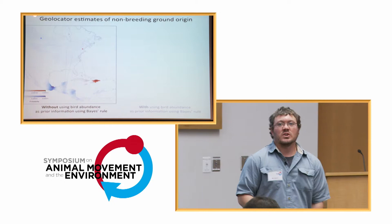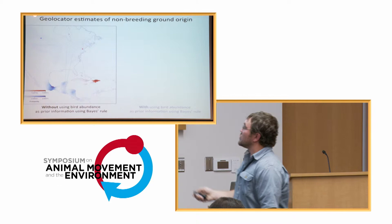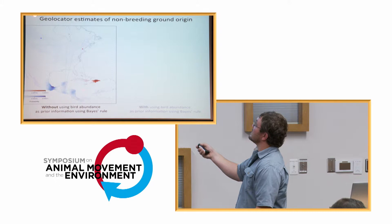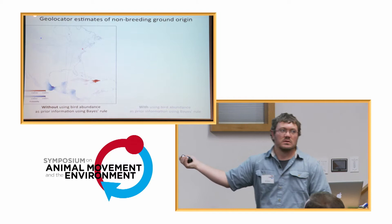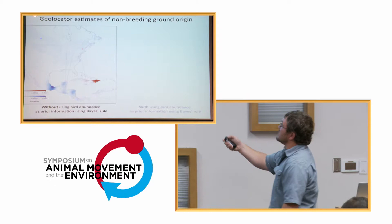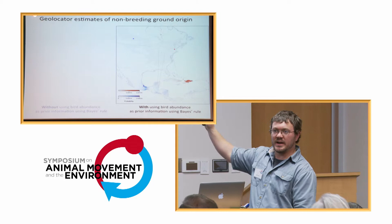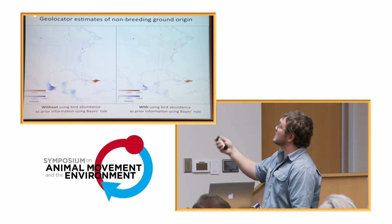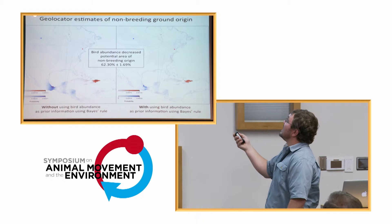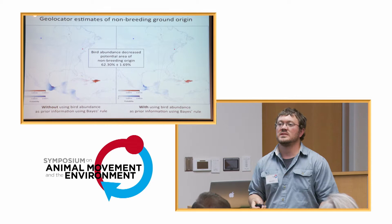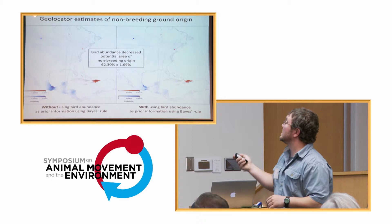Here is the combined kernel density estimate for all birds captured at one site — the non-breeding distribution without incorporating breeding bird abundance, but with areas like open ocean removed. With incorporating breeding bird abundance we get a much finer resolution of where those birds might actually be going. The most exciting result for me is that the potential area where those birds went decreased by 62%, so we can really refine where those birds might be going by incorporating this abundance data.